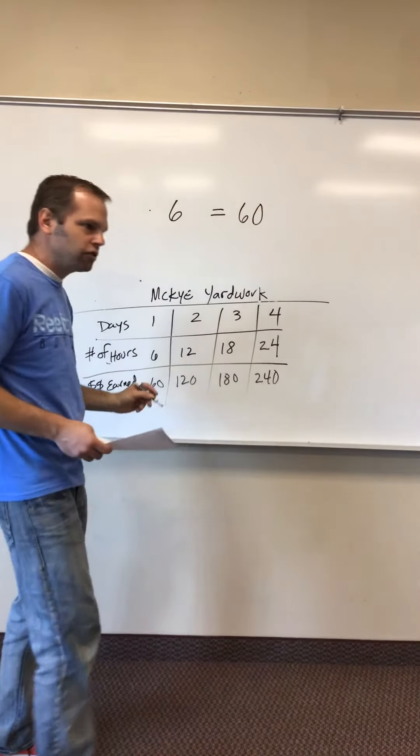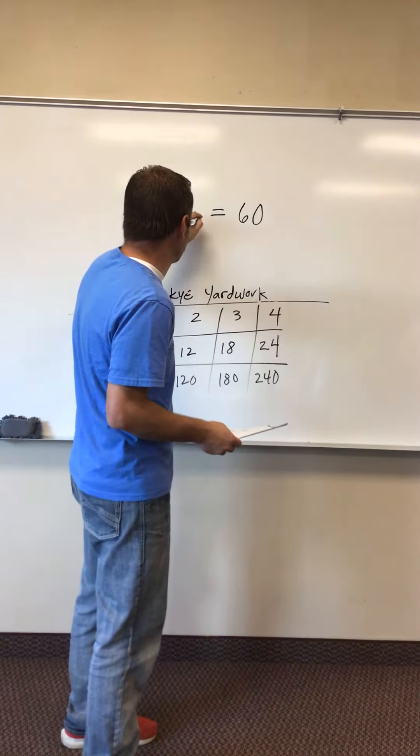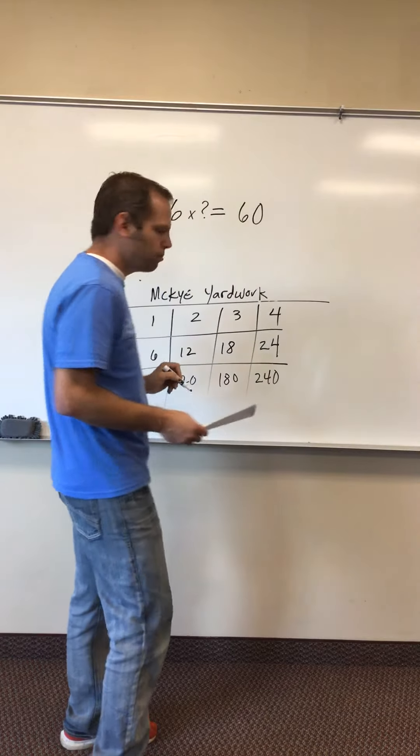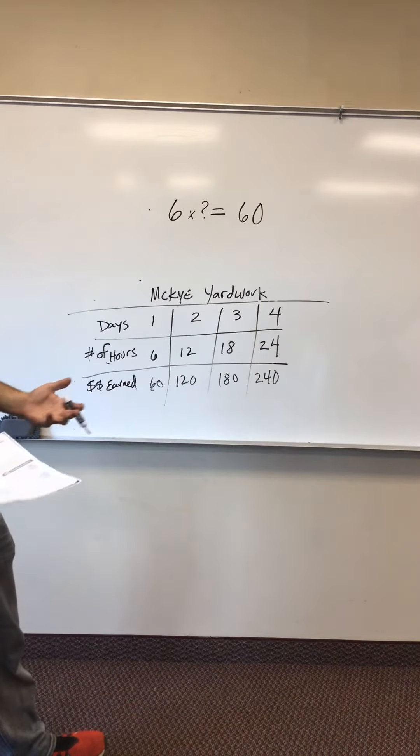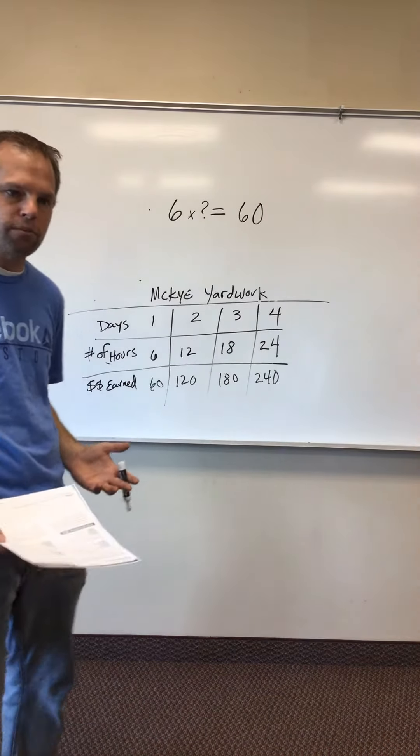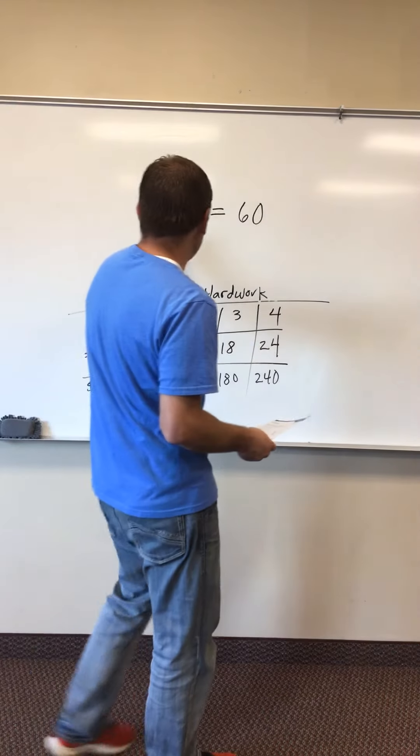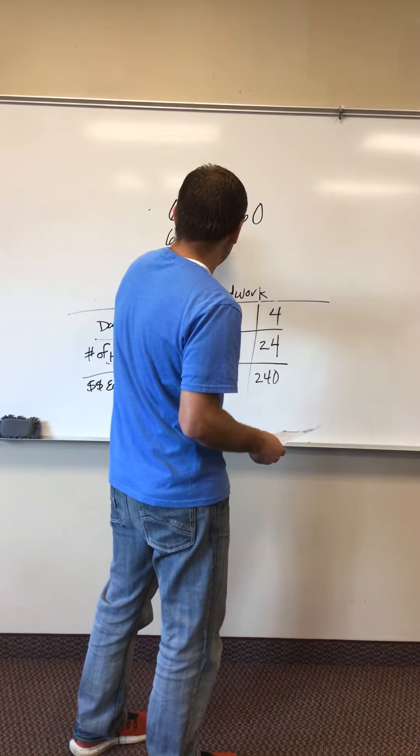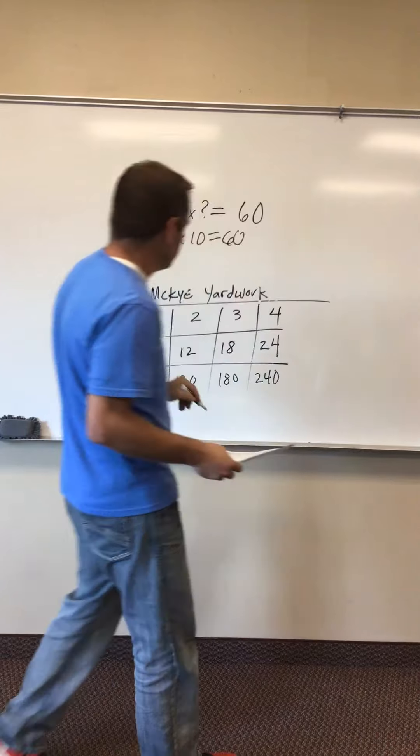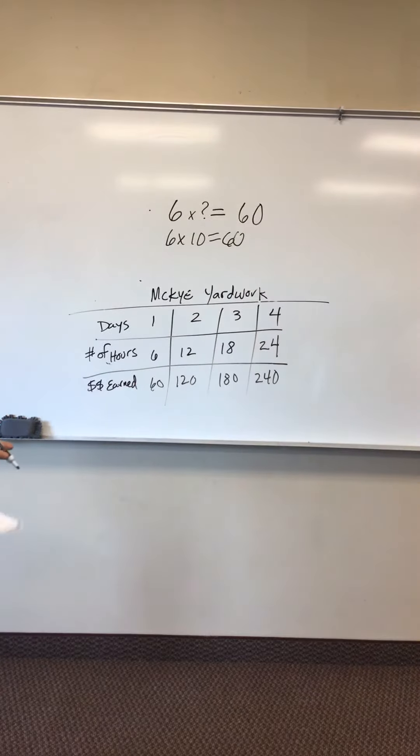Six hours times something makes 60 bucks. I know a lot of you already say, well geez Mr. Bauer, that's pretty easy. Six times 10 would be $60, so he must be making $10 an hour.